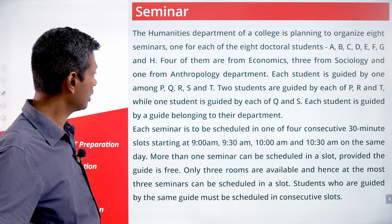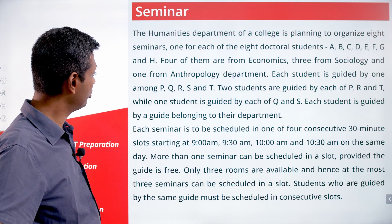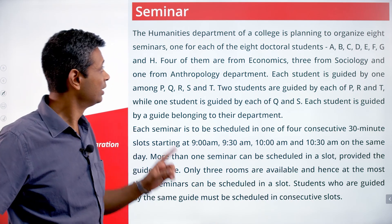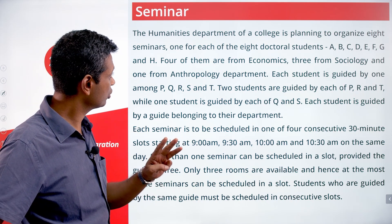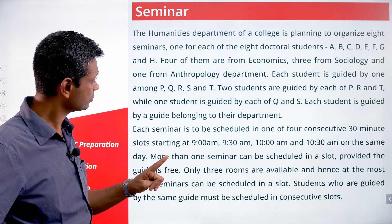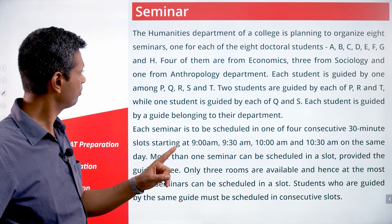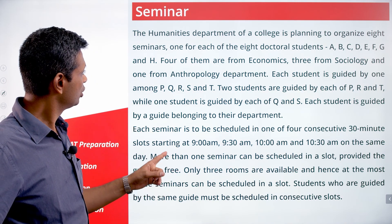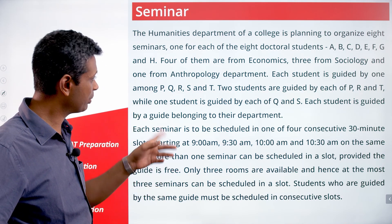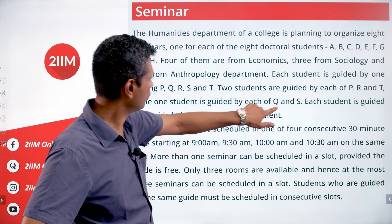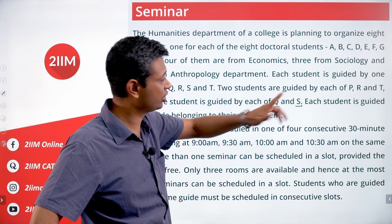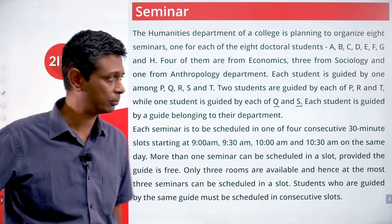Each student is guided by a guide belonging to their department. Eight students, three departments — four, three, one. Each student guided by one professor: two students by P, R, and T; one each by Q and S. The one professor here — Q or S — should be an anthropology professor, since there is only one anthropology student.